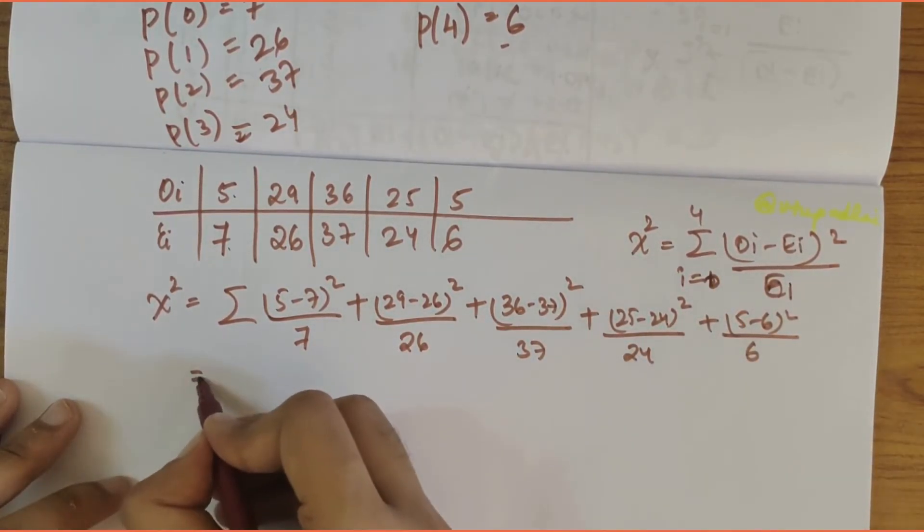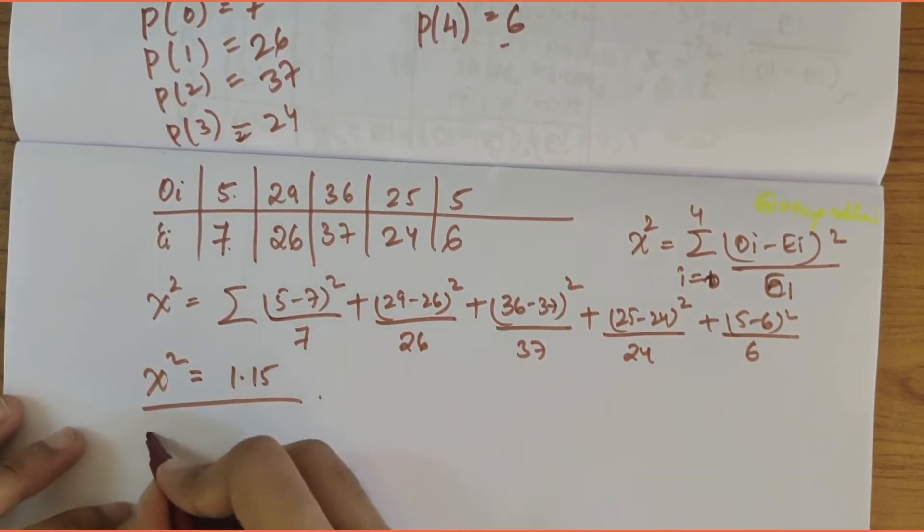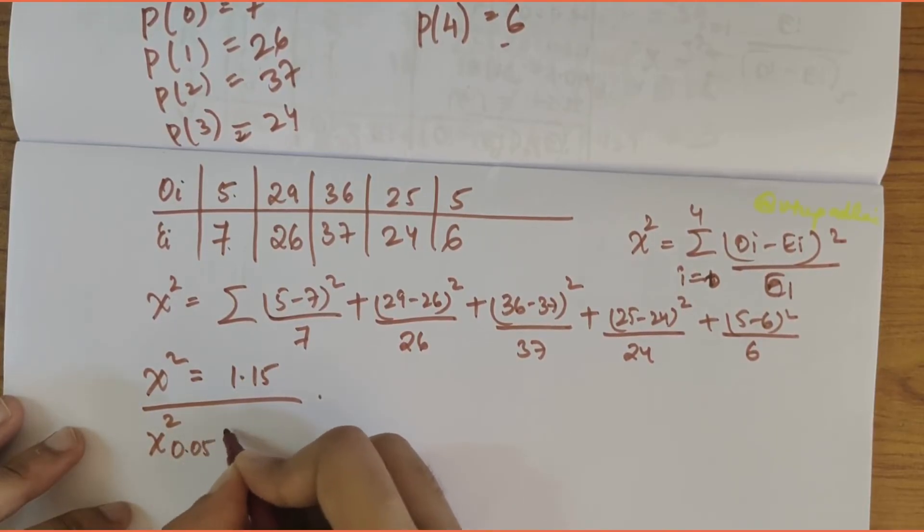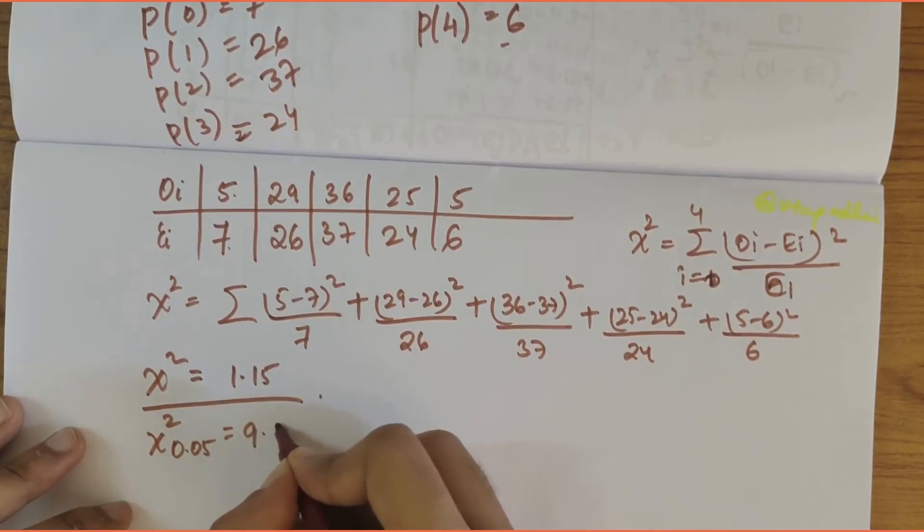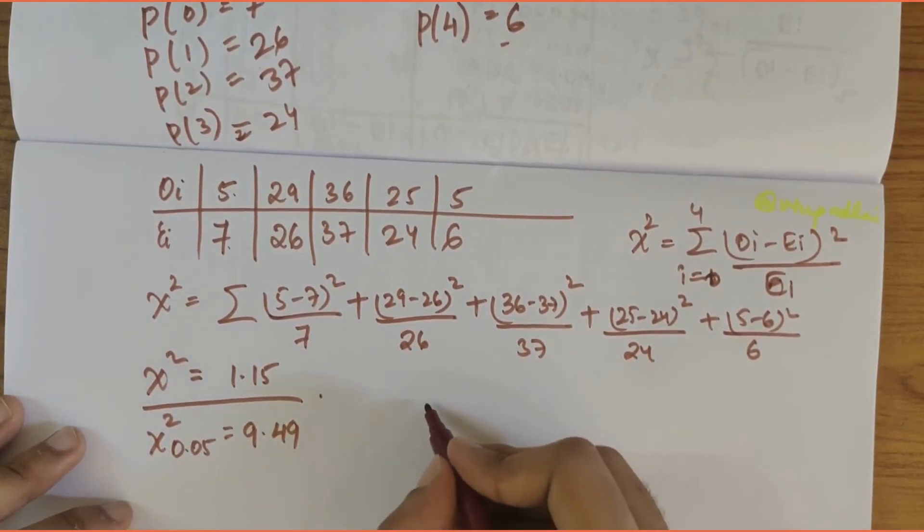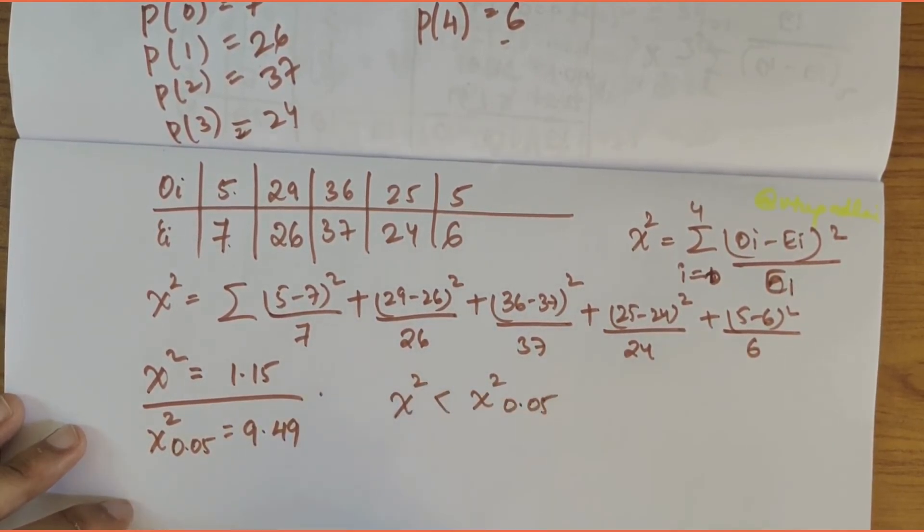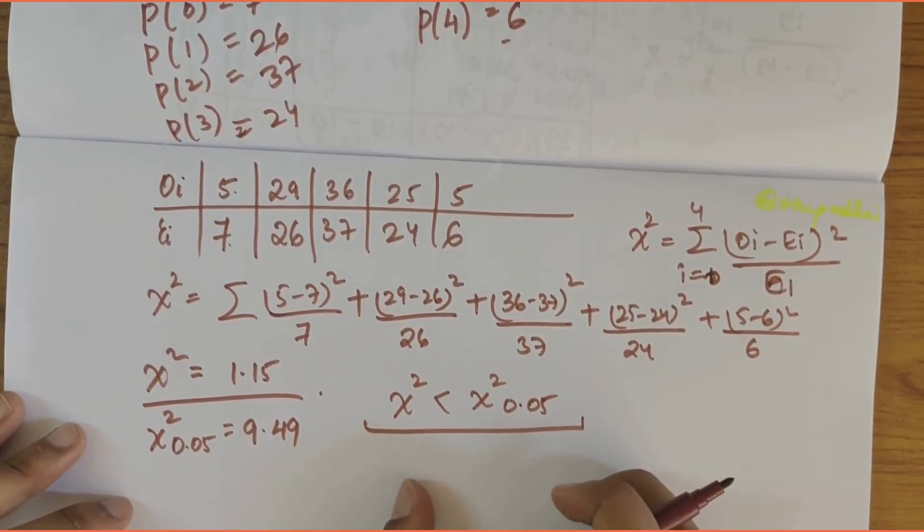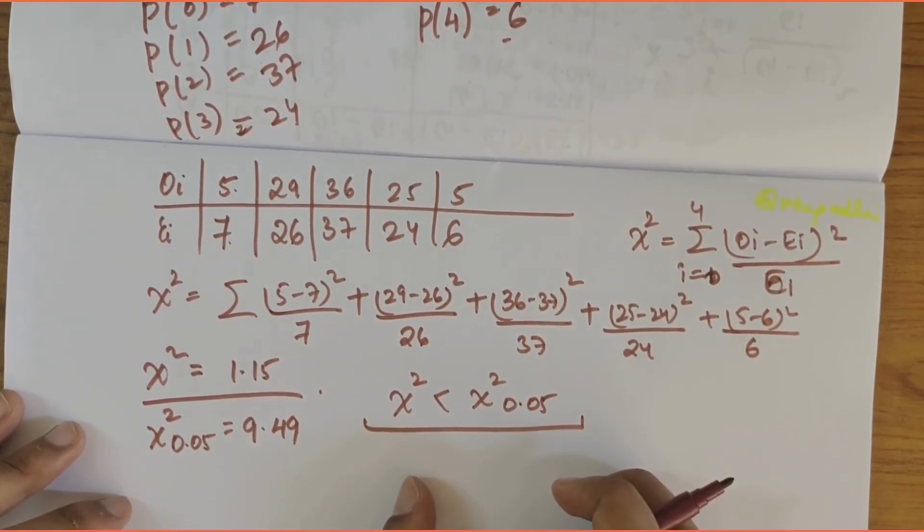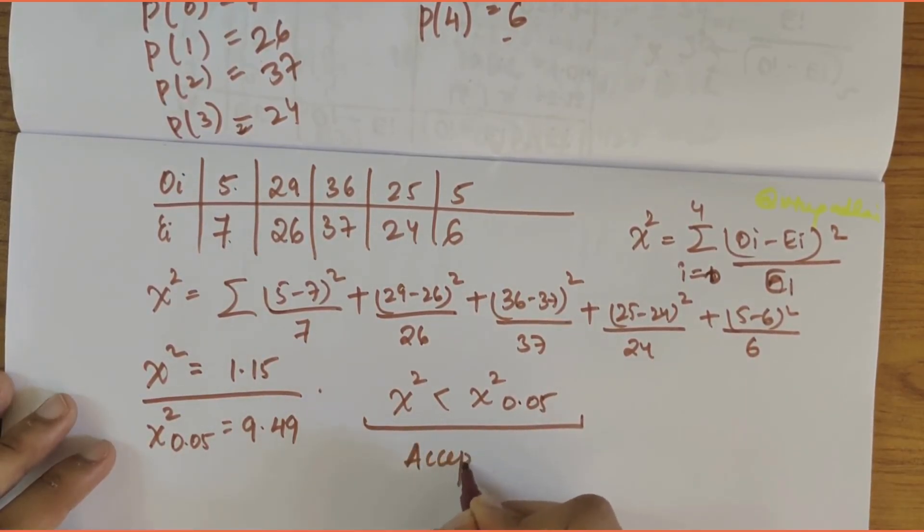When you solve this you get the value of 1.15. Chi-square value is 1.15, and the value for reference at 5 percent level of significance they had given was 9.49. So we can say that chi-square value is less than chi-square of 0.05. Hence the hypothesis that the data follows binomial distribution is accepted.